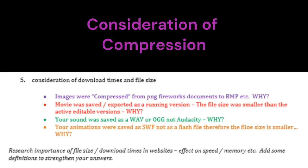If you've used Fireworks, you would have your original image as a PNG and you may have changed that to a JPEG or a bitmap. You need to talk about why you changed it from a PNG, what the file size was, why you changed it to a BMP or a JPEG, how much time it saved you, and discuss lossy and lossless compression and how much faster it will be to upload onto the website if the file size is smaller.